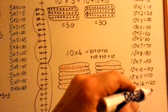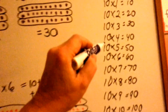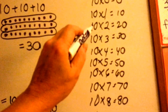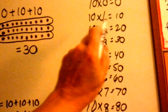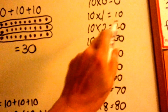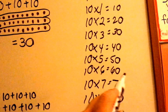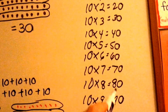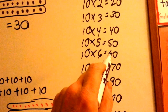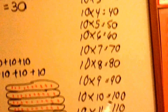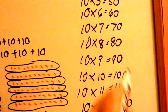They all end in a 0. If you look at this: 10 times 1 is a 1 with a 0. 10 times 2 is a 2 with a 0. They all go that way. Look at 10 times 6 is a 6 with a 0. 10 times 9 is a 9 with a 0.